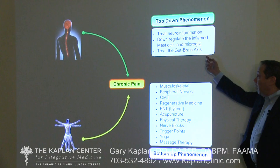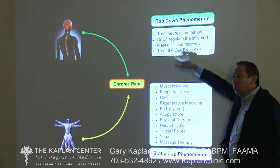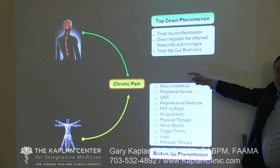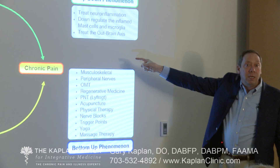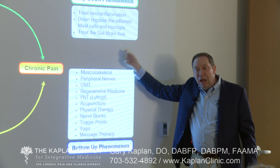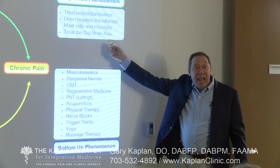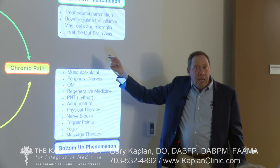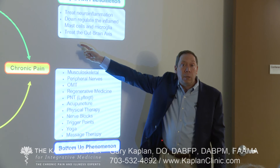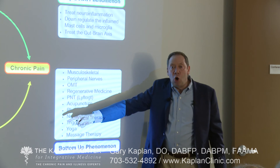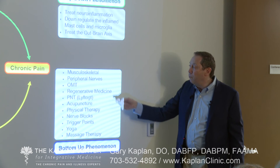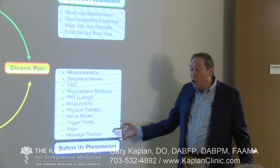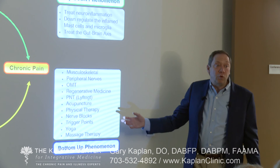We have to treat from both a top-down and a bottom-up approach. This is crucial — it's the piece that the entire profession doesn't get. Until we get this, we will never solve the problem of chronic pain and depression. By focusing on this, we will get many more people better and achieve much more complete results. The extremity that hurts is frequently just the smoke. Utilizing techniques such as regenerative medicine, osteopathic manipulative therapy, physical therapy, nerve blocks, and trigger point treatment can all be effective and needs to be part of a comprehensive chronic pain program.